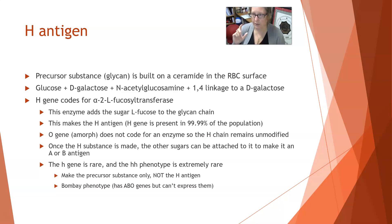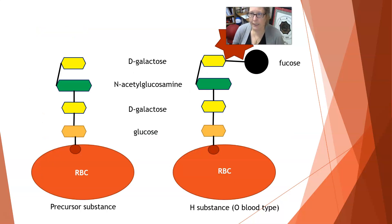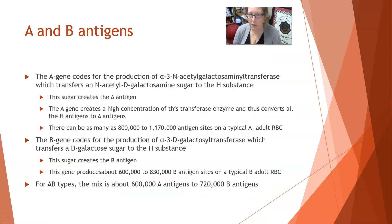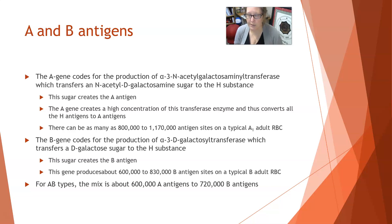Here's what it looks like illustrated: the precursor substance is the ceramide with glucose, D-galactose, N-acetylglucosamine, and D-galactose added. Then an enzyme comes and adds L-fucose — and this is the H substance. This would represent the O blood type: that's all you make on the surface of the red cells. If all you make is the precursor substance without the H antigen, you would have the very rare Bombay phenotype. Now, the A gene codes for the production of alpha-3-N-acetyl-D-galactosamyl transferase enzyme, which transfers an N-acetyl-D-galactosamine sugar to the H substance already built, and that last addition creates the A antigen.